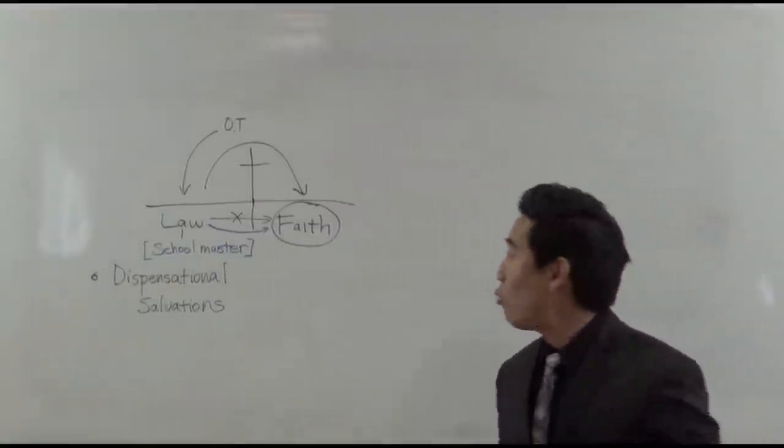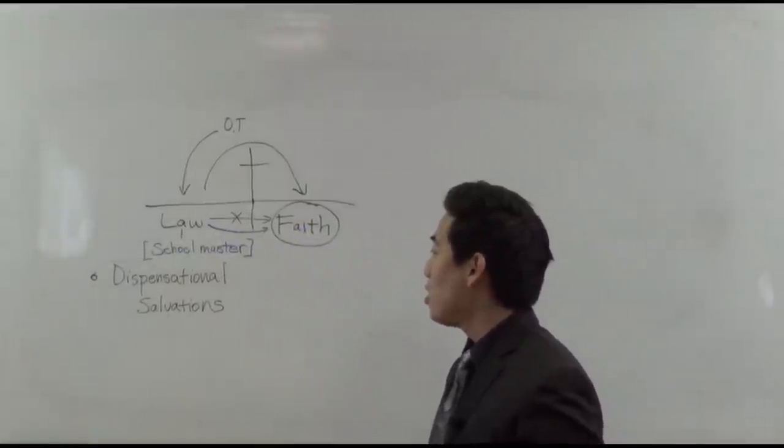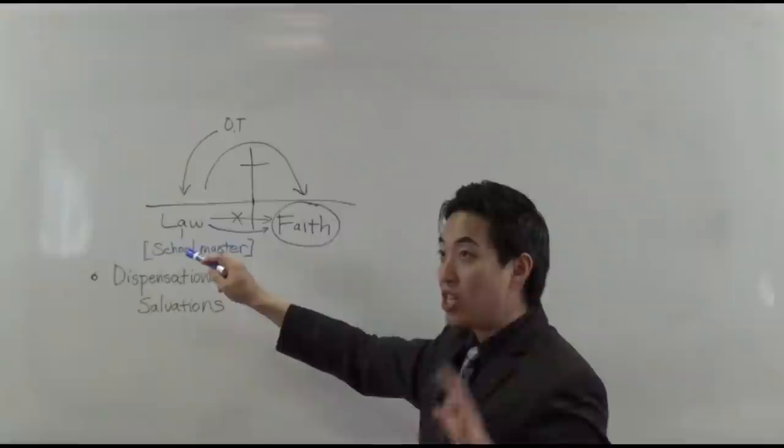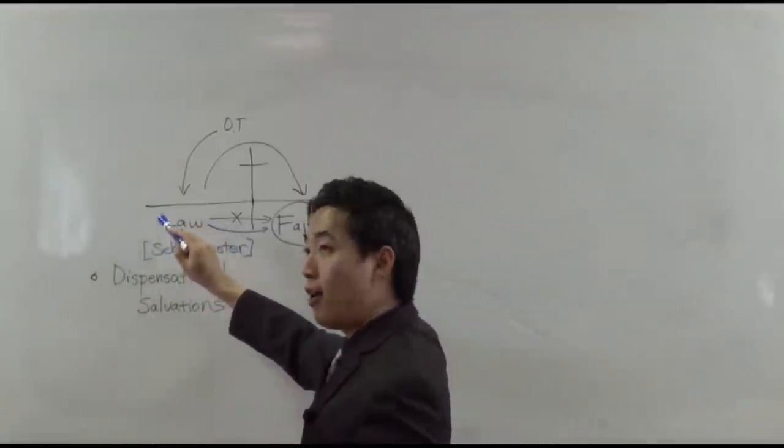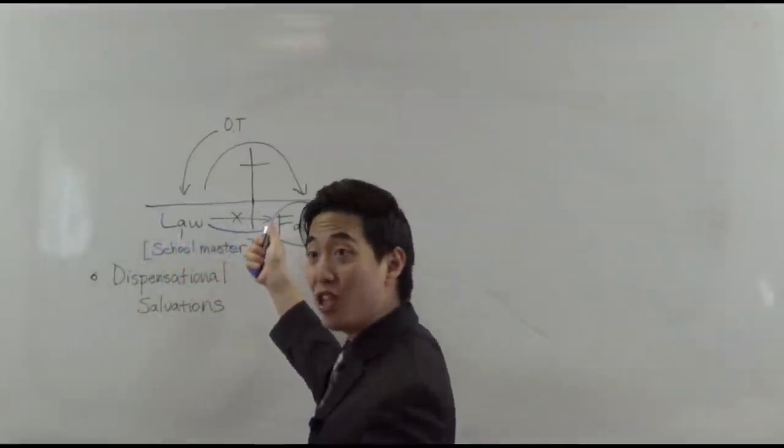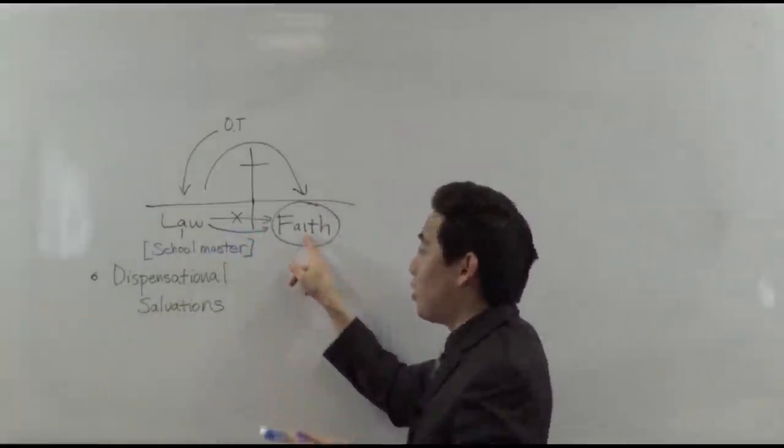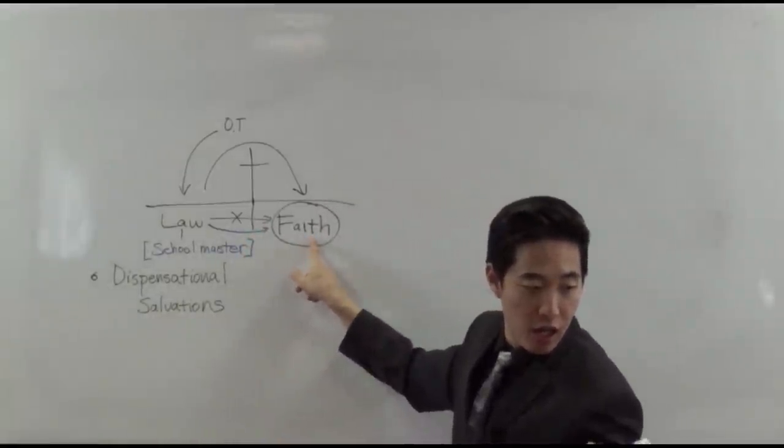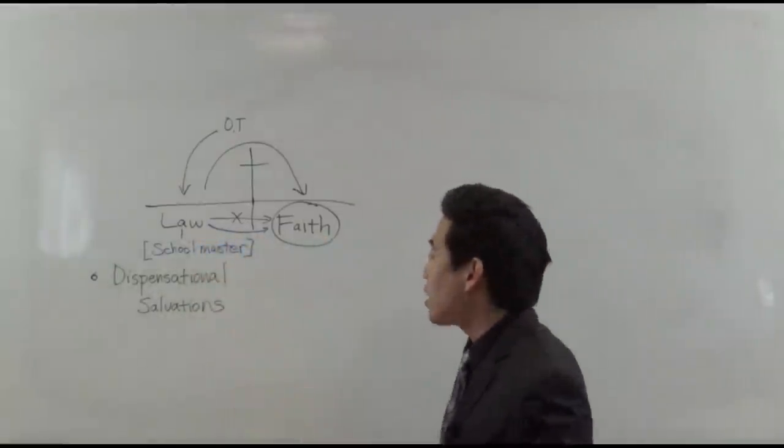That we might be justified by what? Faith. So that now we can be justified by faith. So during the Old Testament, remember, they had to live according to the law for their salvation. No, it's by faith, pastor. No, because faith was not yet revealed yet. Okay? Now that faith is revealed, right? Verse 23. Now we can argue, verse 24, this guy doesn't save you. Now we can argue that. Why? It's very simple.